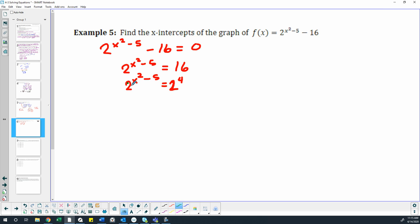That allows me to ignore the 2's, set the exponents equal to each other. So x squared minus 5 equals 4, and just solve this. So x squared equals 9. Square root both sides.